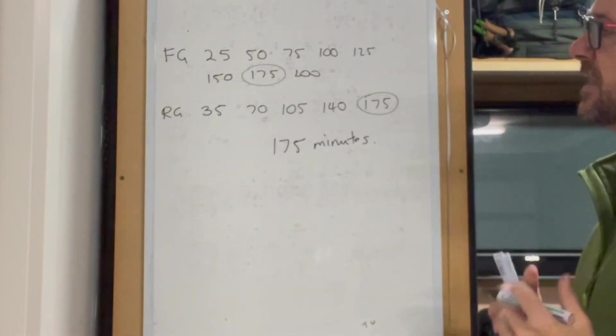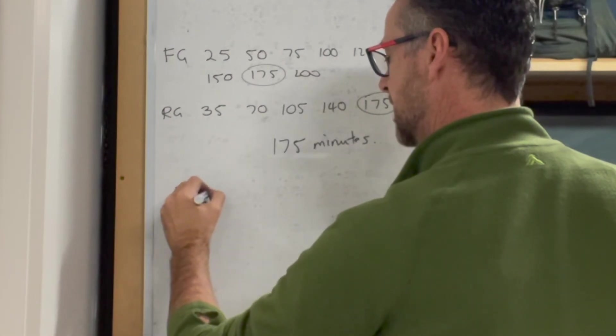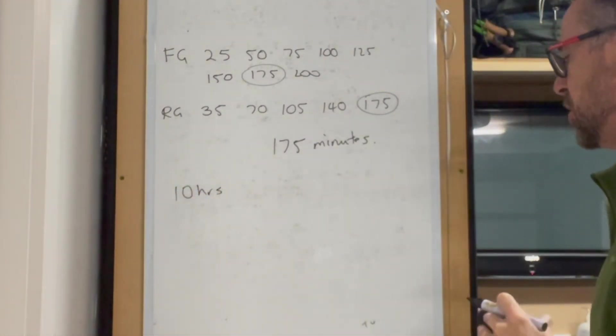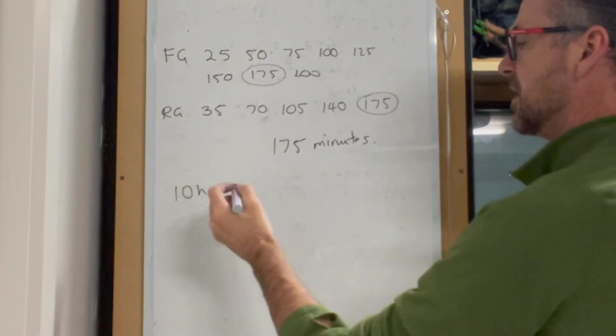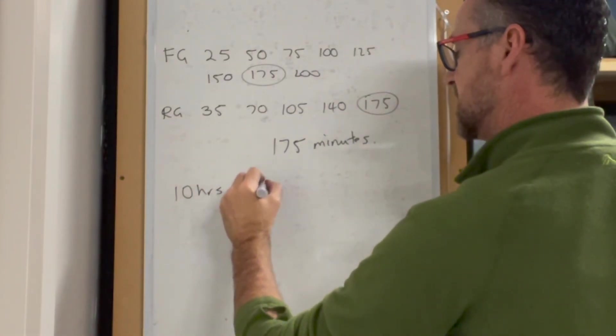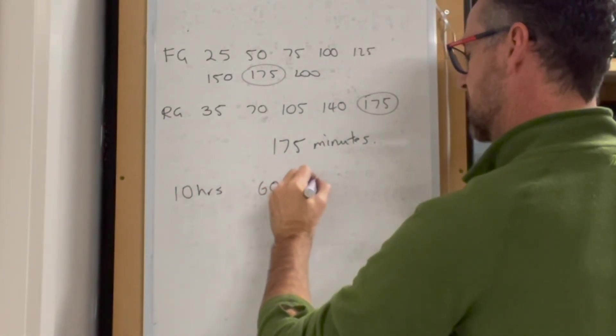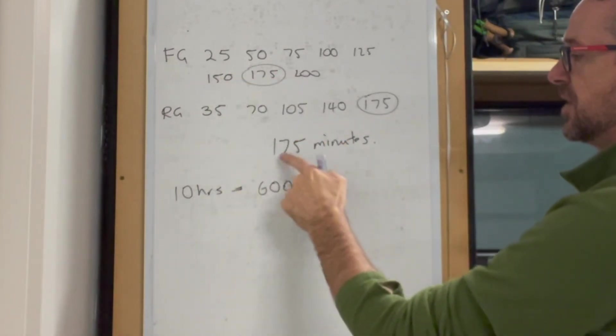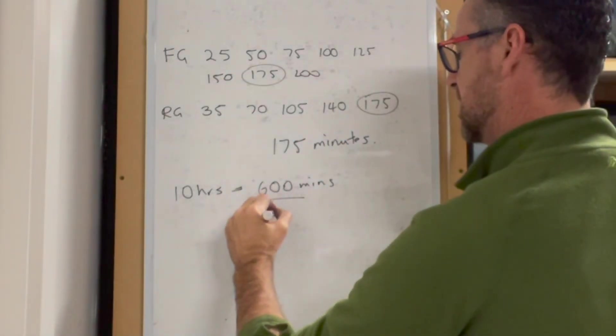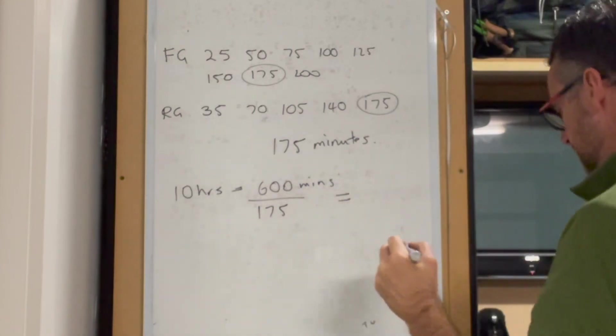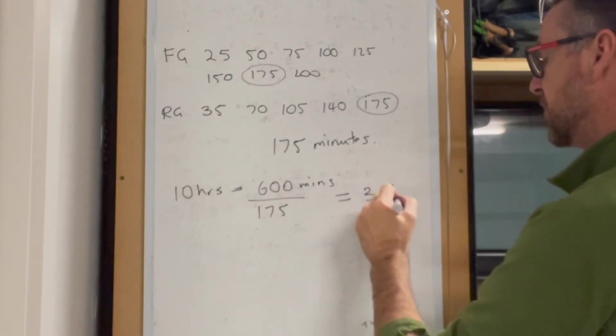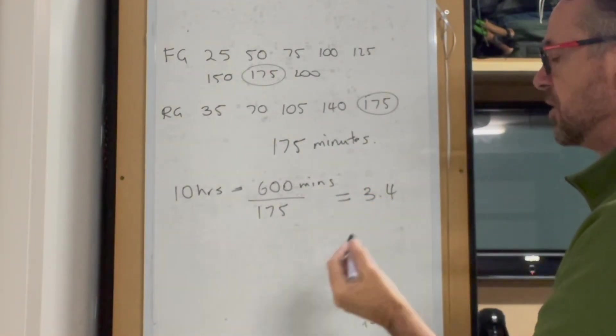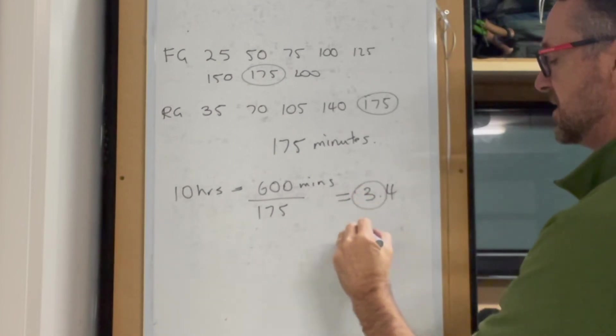If the farm is open for 10 hours a day, how often will the gates open and close together? 10 hours equals 600 minutes. The gates open every 175 minutes. 600 divided by 175 gives 3.4. Because we're after how many times they open, it's the whole number element, so it's 3 times. Done.